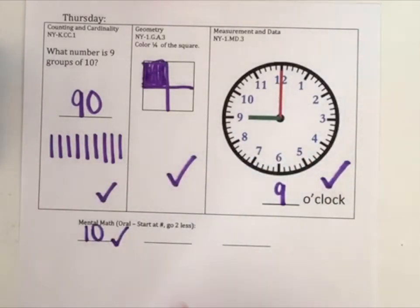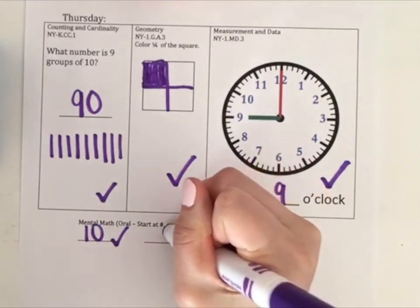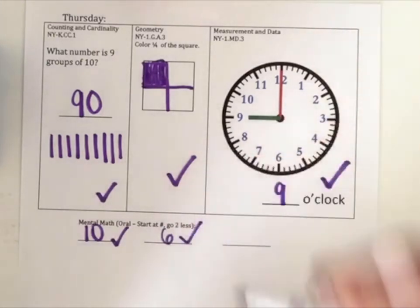For the next one, start at eight, and what is two less than eight? Right, two less than eight is six. Did you get that? Give yourself a check.